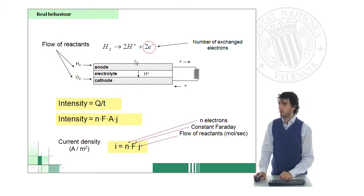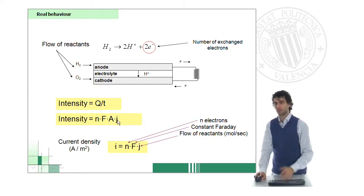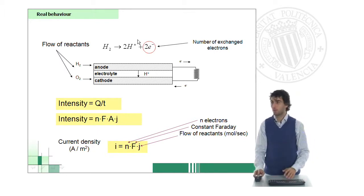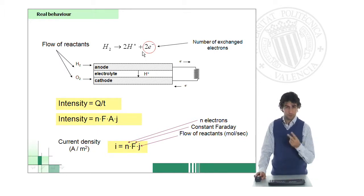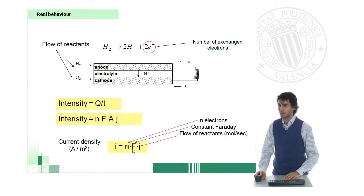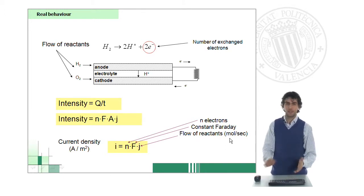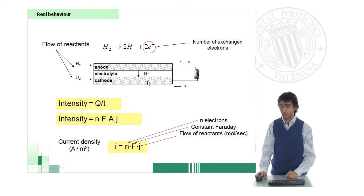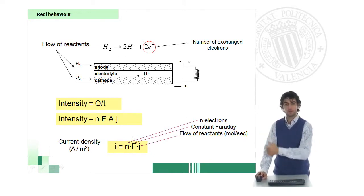Let's have a look first at how the intensity can be calculated. The intensity, or current density, can be calculated by using this equation, which includes the number of electrons of a reaction - in this particular case, two electrons in the oxidation of hydrogen - the Faraday's constant F, and also the flow of reactants. In the international system it will be moles per second. So for a single cell, this will be the equation which gives you the intensity.